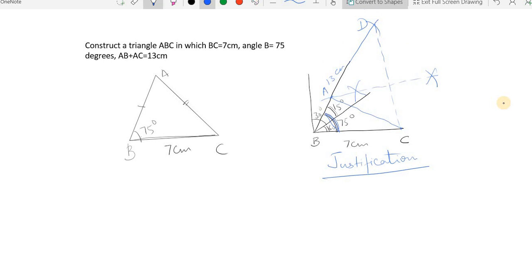You can say that in the above figure, A lies on the perpendicular bisector of BC. Therefore AD equals AC.